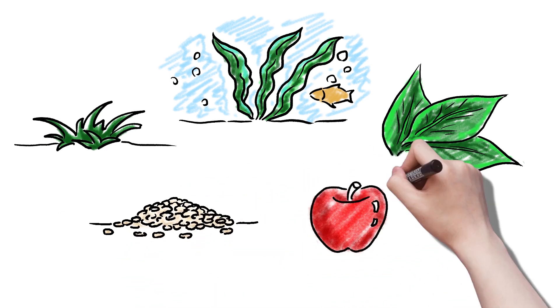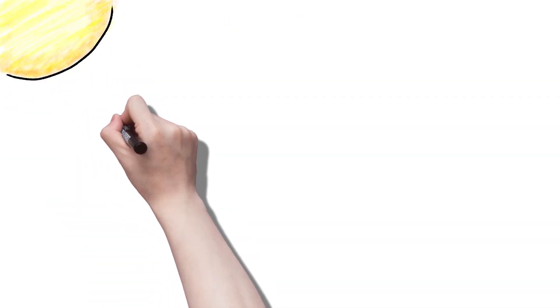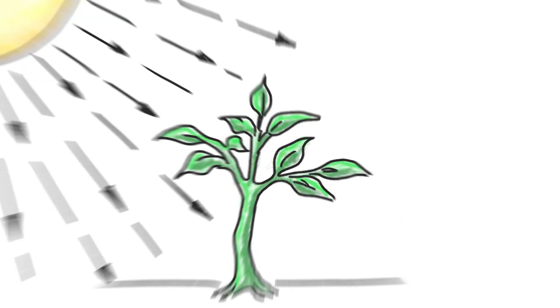Grass, algae, leaves, grains, and even fruit. As plants grow, they create amino acids from the soil, air, and sun.